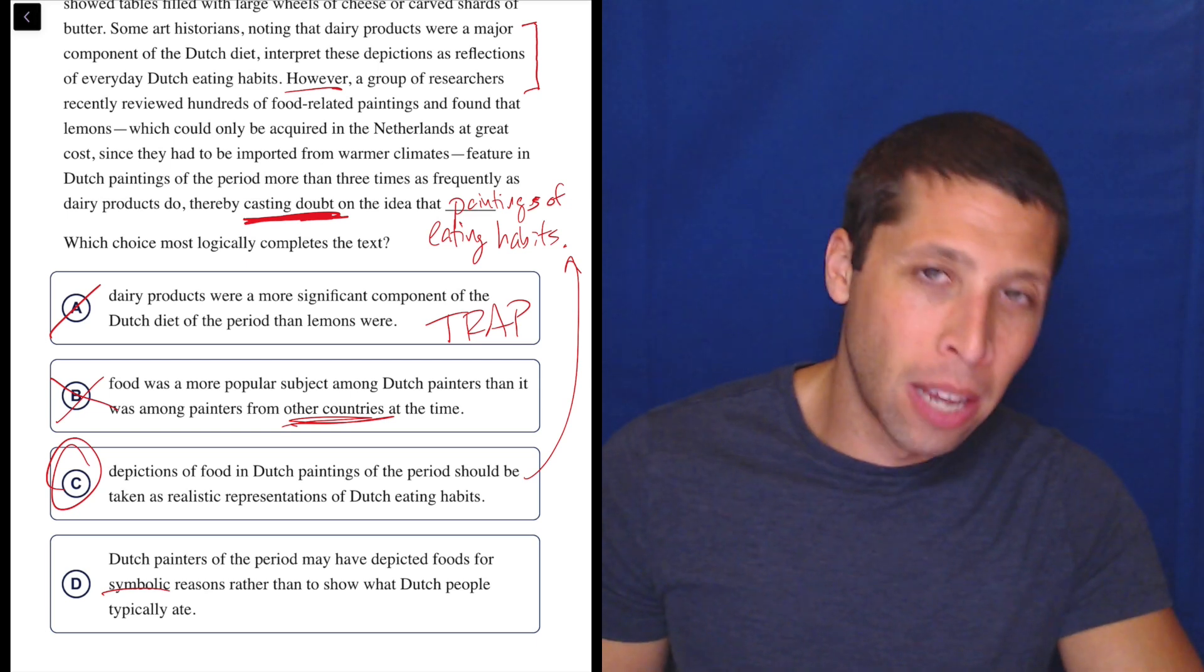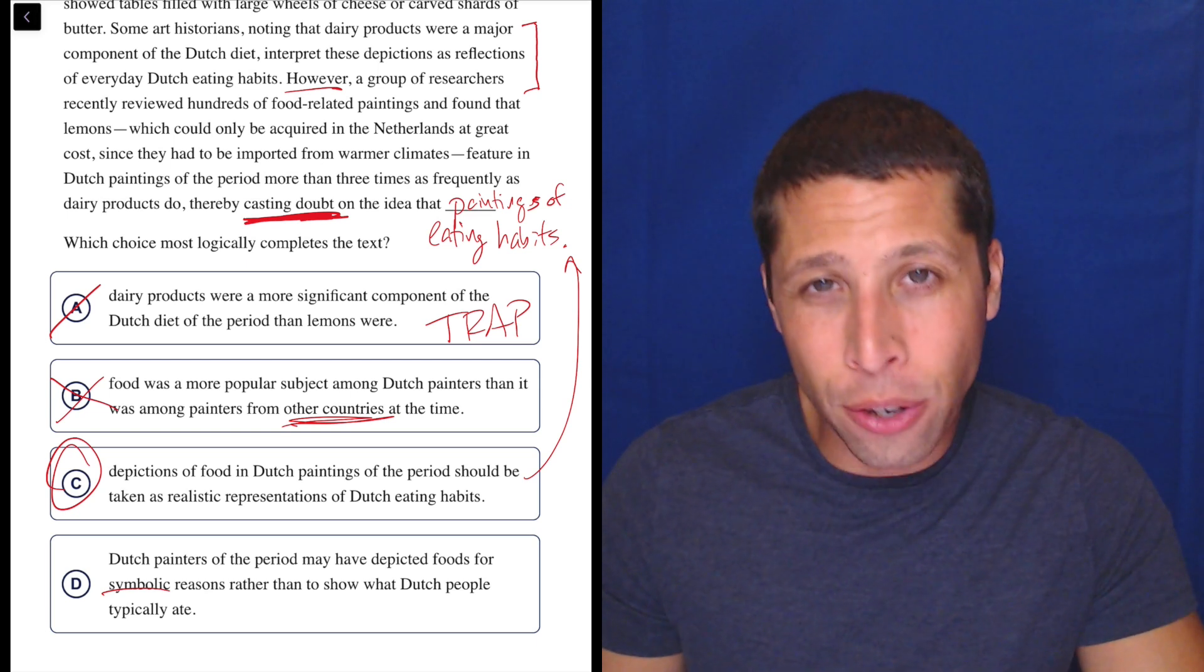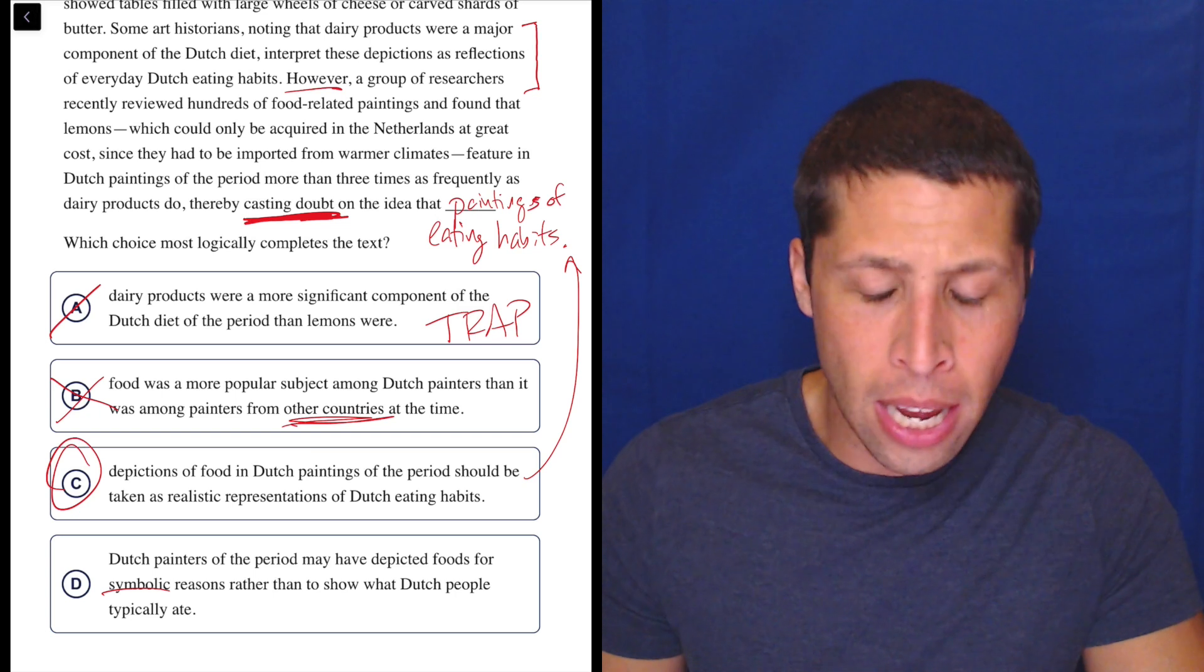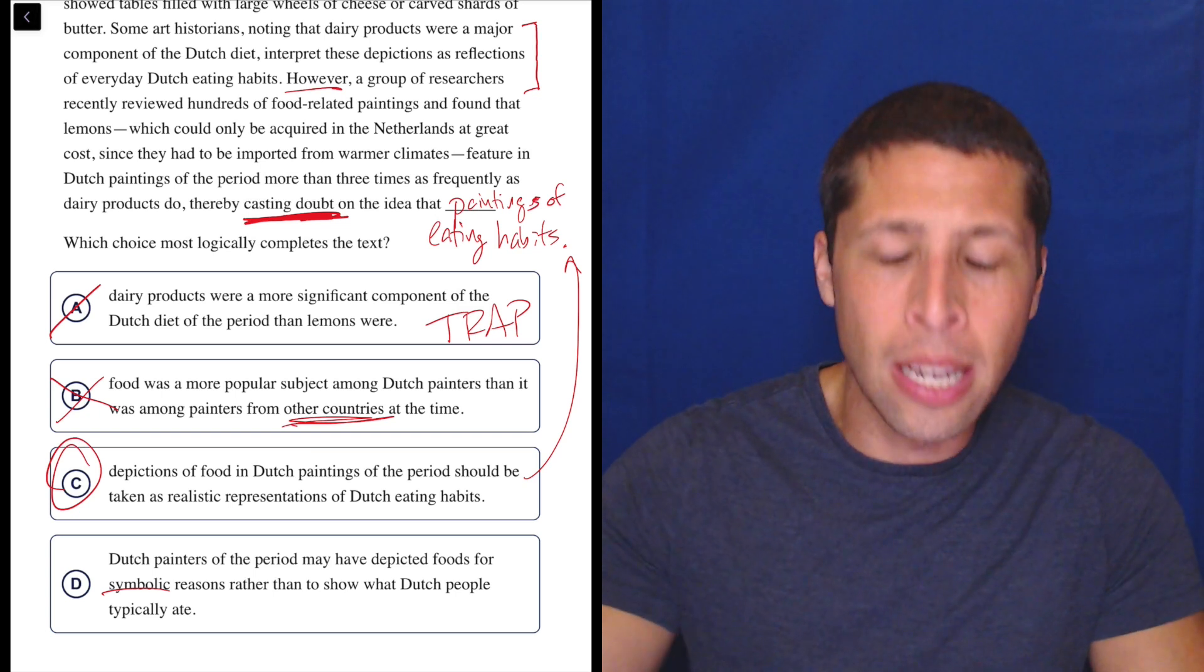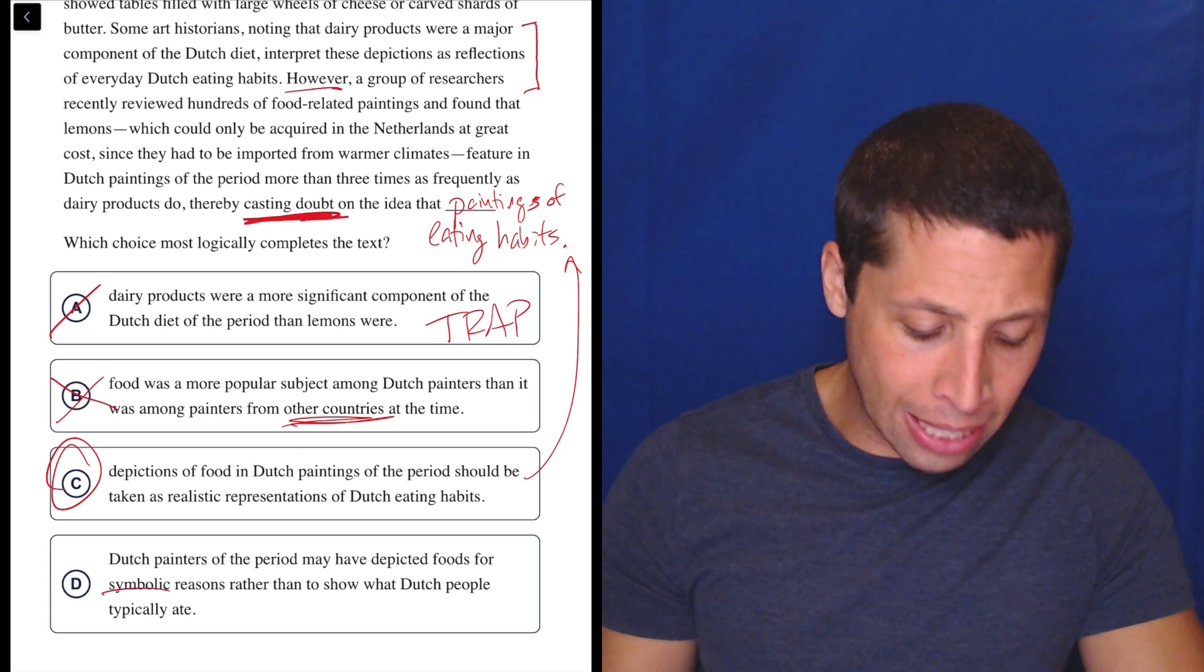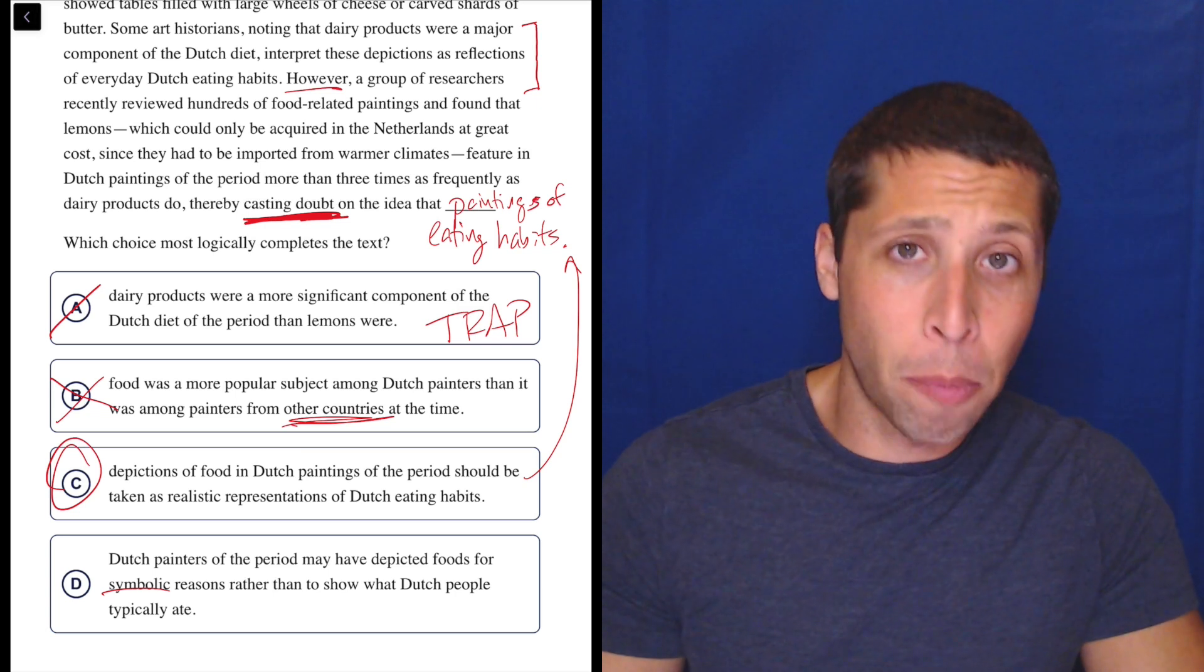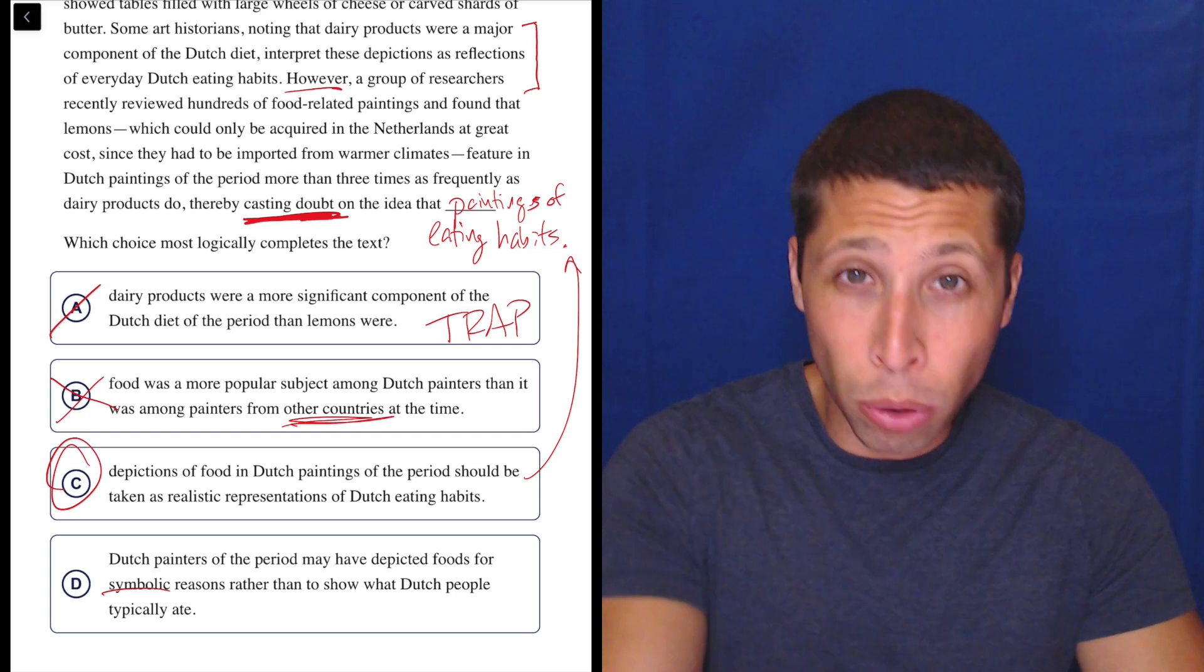So they don't really talk about symbolism. So this is a good example of like, they're kind of bringing in something that's not really in the passage. We can do that from time to time, but we should avoid it. They don't really talk about it. We don't want to speculate about what the lemons mean. It's just a lemon, right? So don't worry about it. So it's possible that yes, they're painting the lemons because they have some symbolic meaning, but I don't really care.